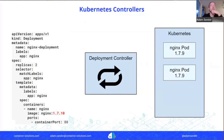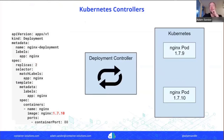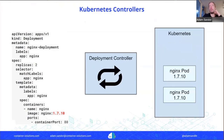If I change the version of the nginx container, the controller executes a rolling upgrade: it starts up a 1.7.10 pod, kills a 1.7.9 pod, and repeats until all pods are on the new version. All kinds of smart behavior can be built into a controller. What we'll be building today is such a controller — also called an operator. The distinction will become clearer in the demo.